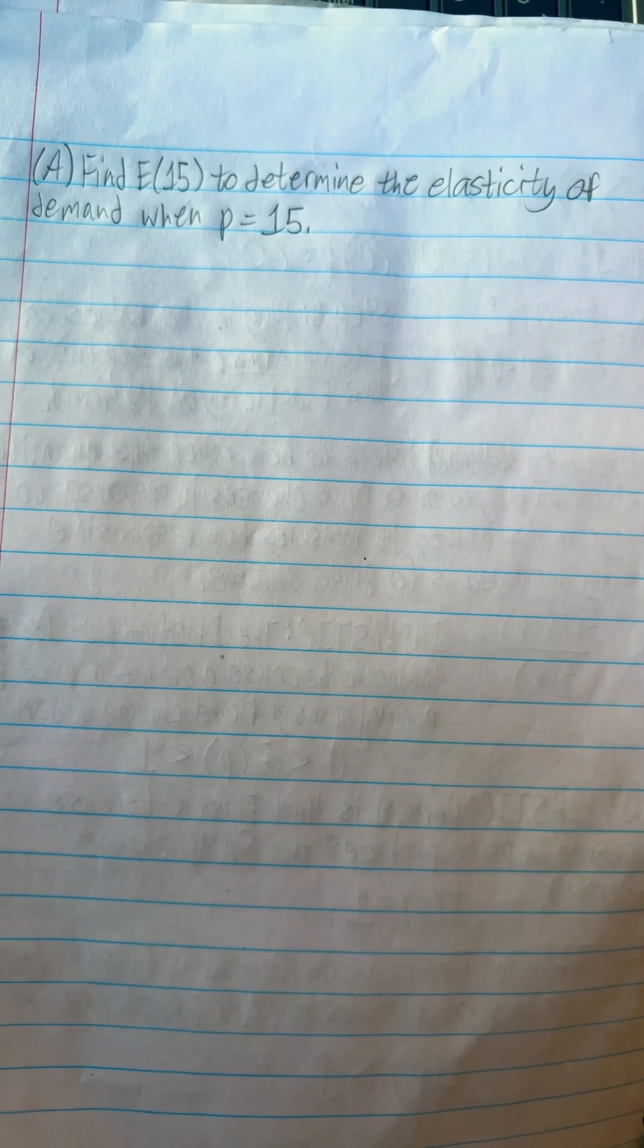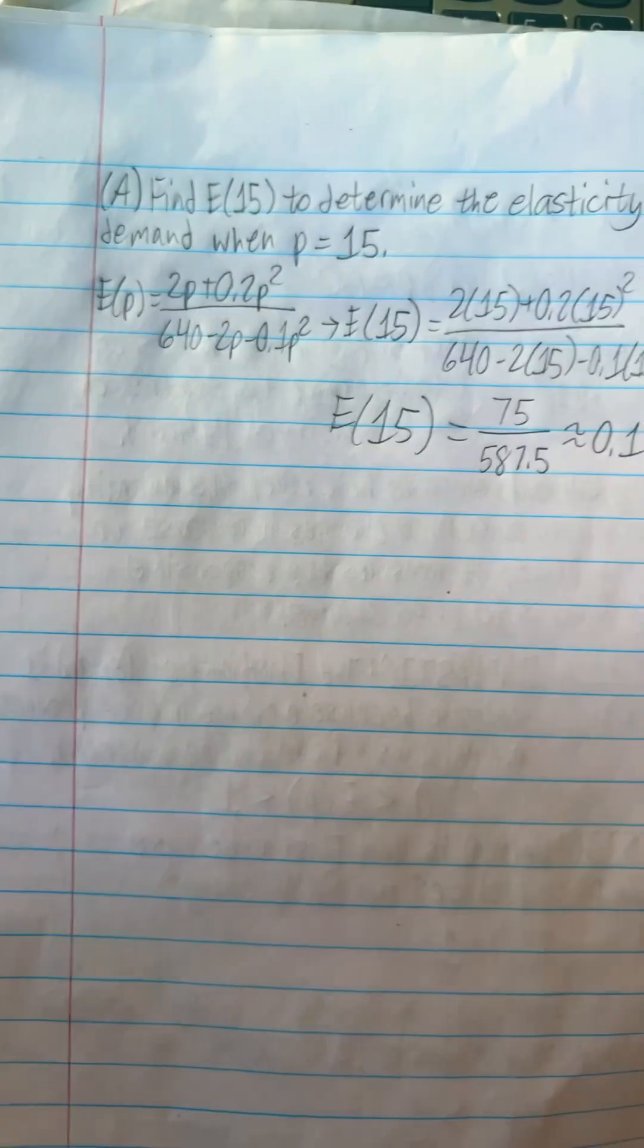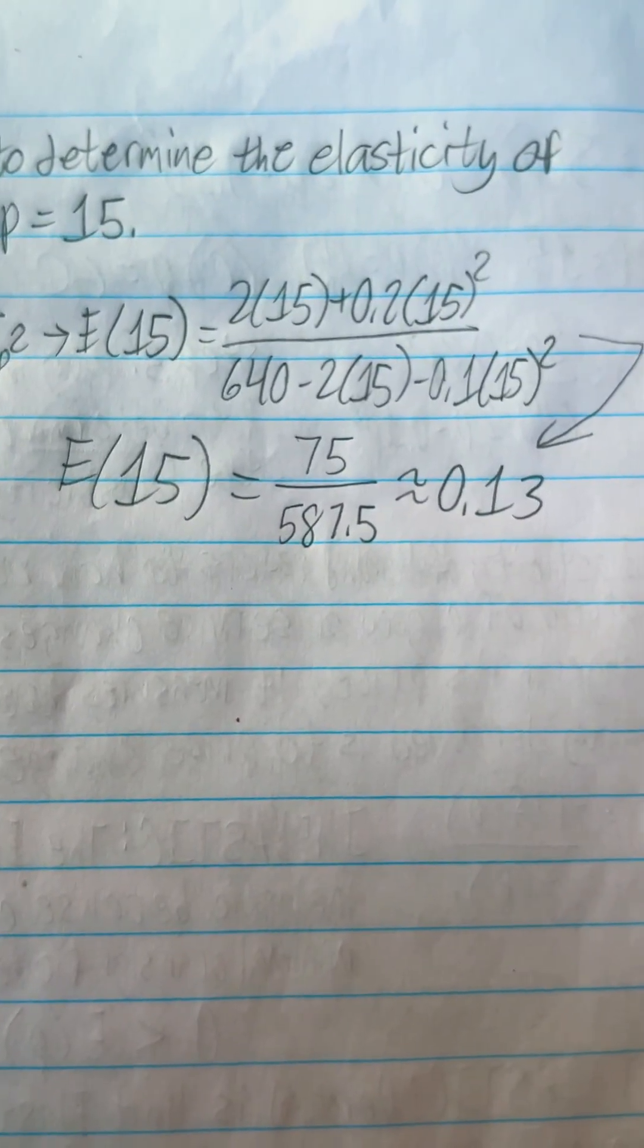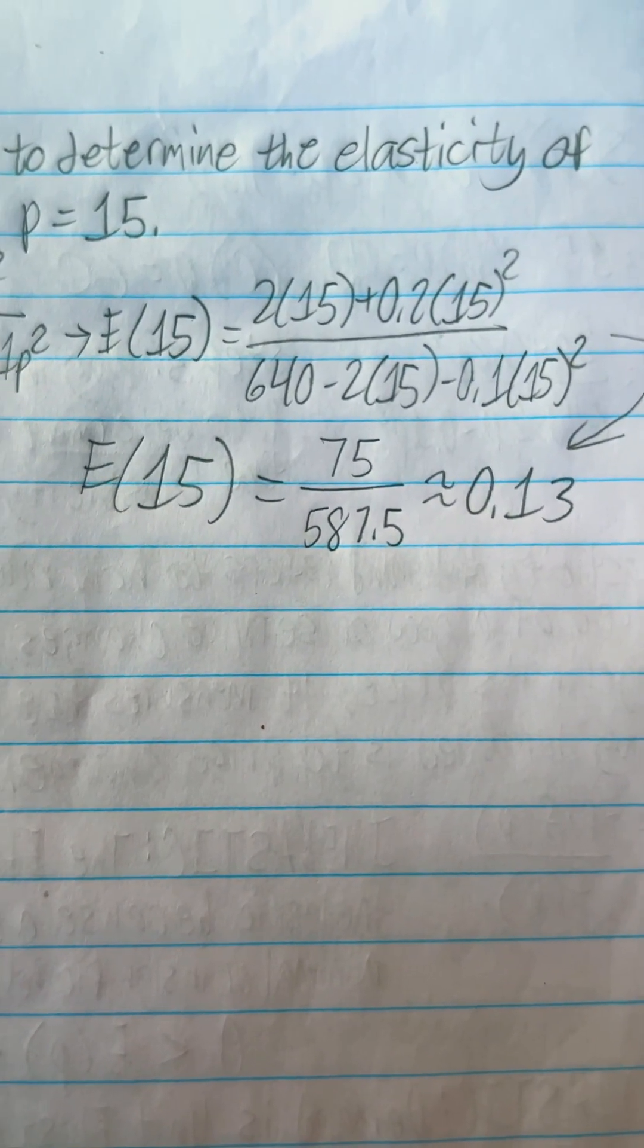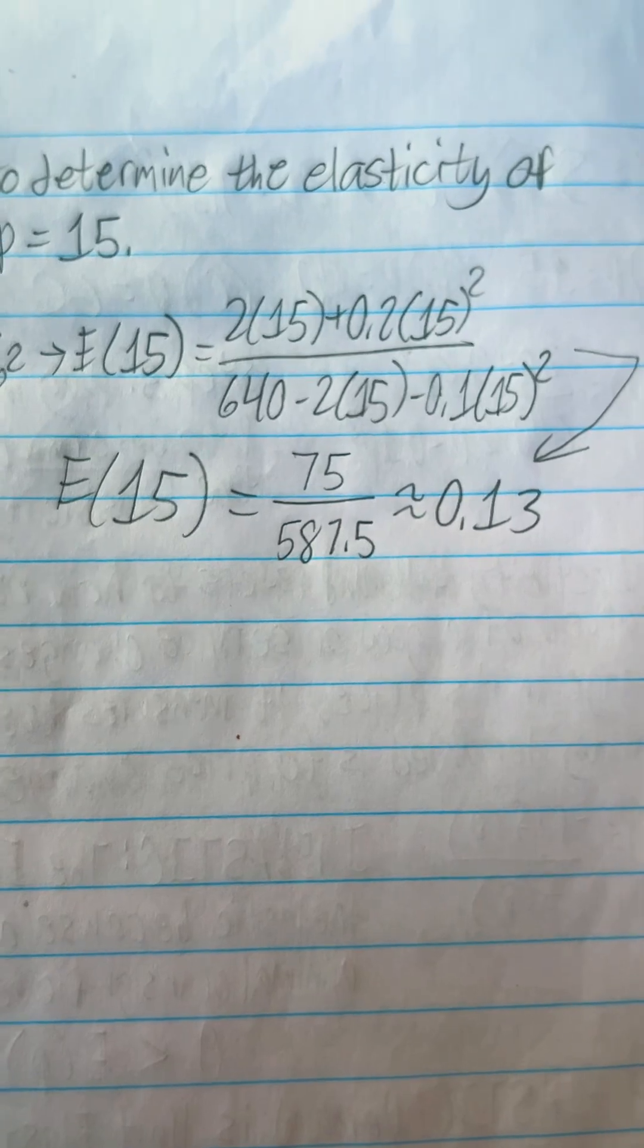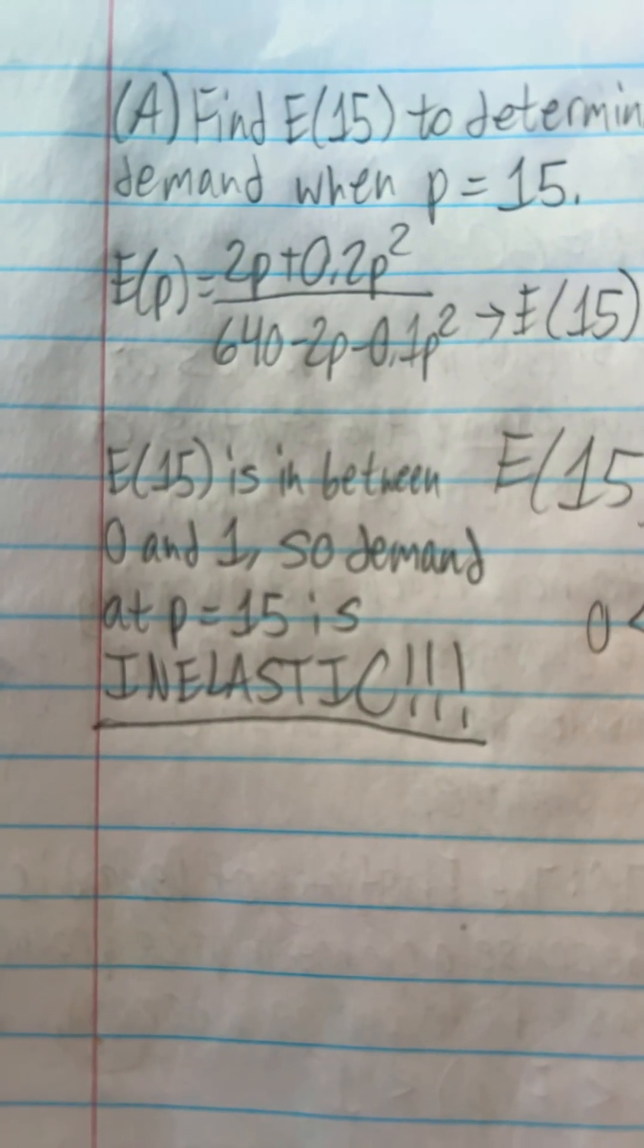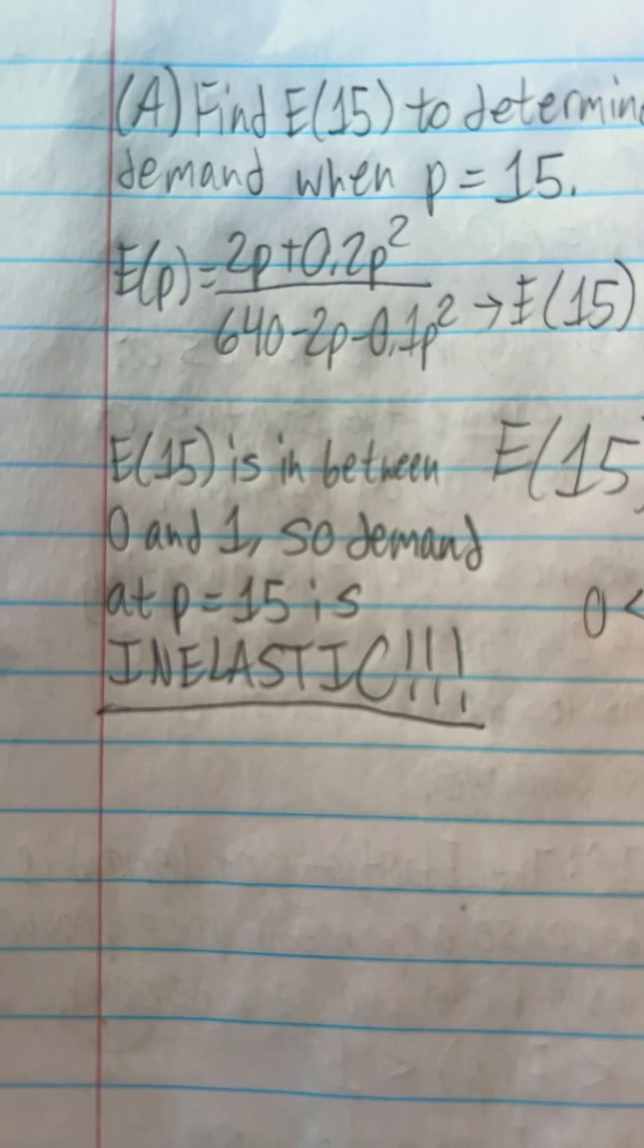Part A. Find E of 15 to determine the elasticity of demand when P is equal to 15. Plug P equals 15 into E of P, and that'll give you E of 15 is equal to 75 divided by 587.5, which is approximately equal to 0.13. E of 15 is in between 0 and 1, so demand at P equals 15 is inelastic.